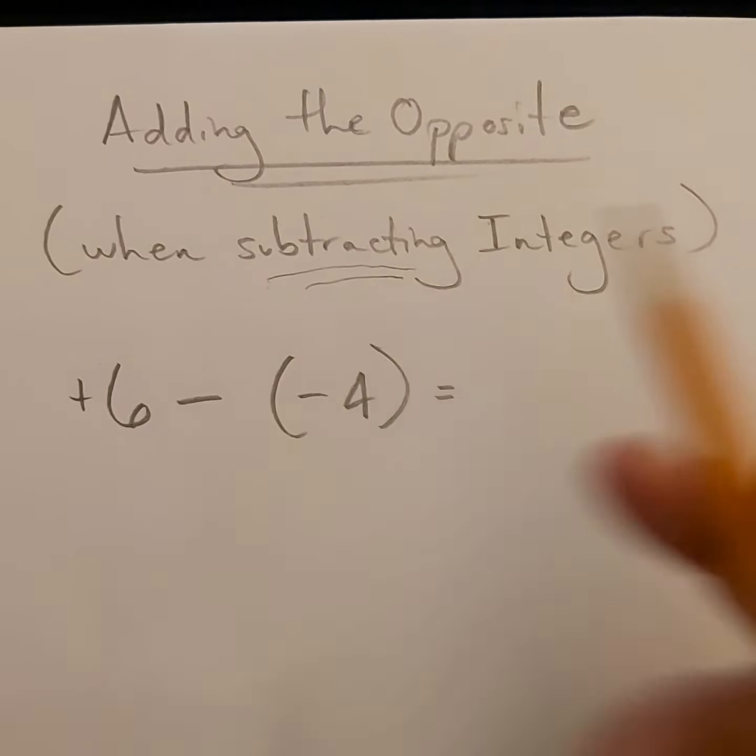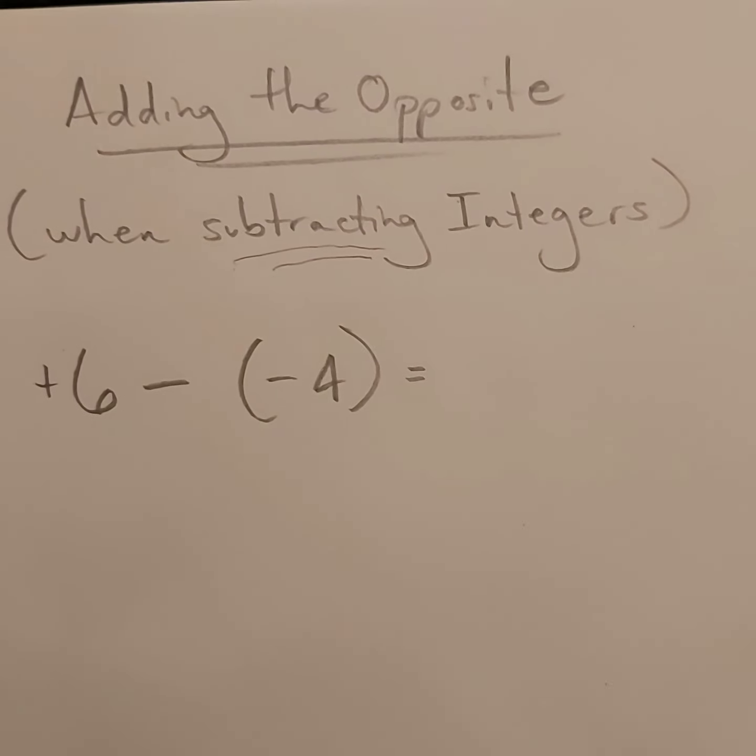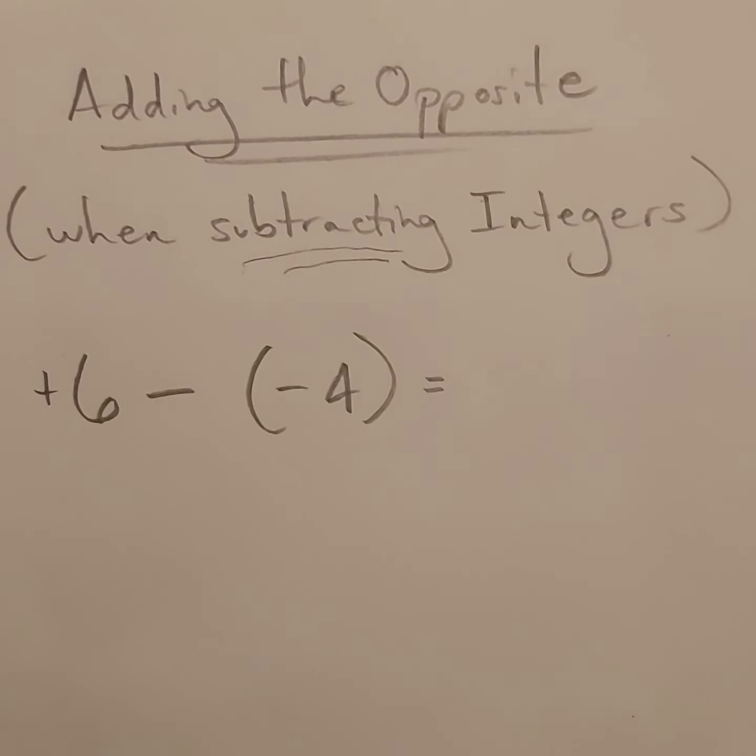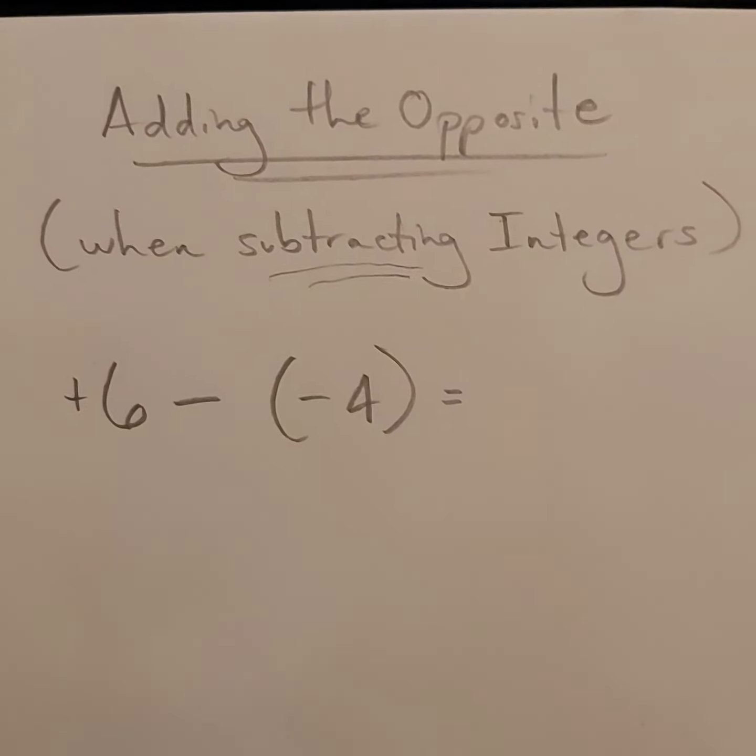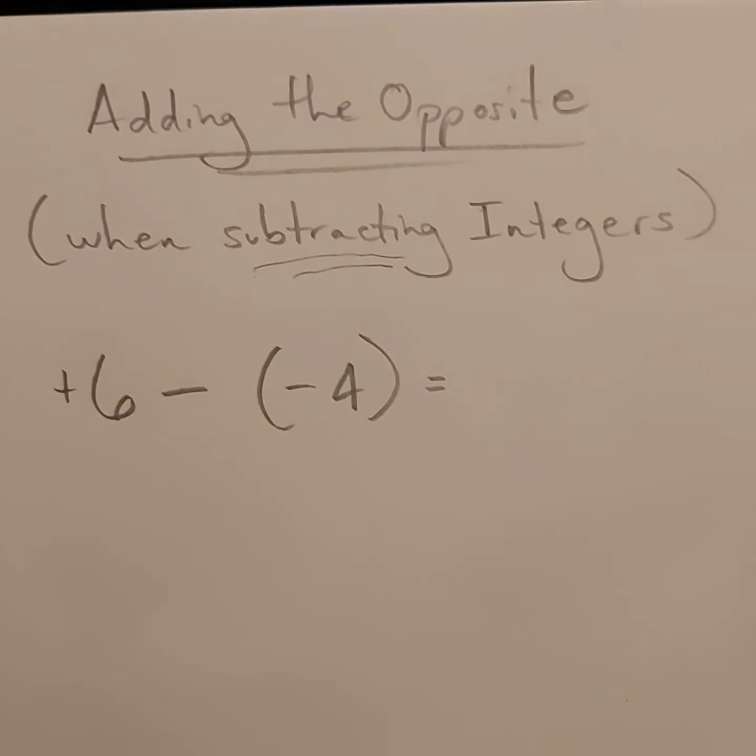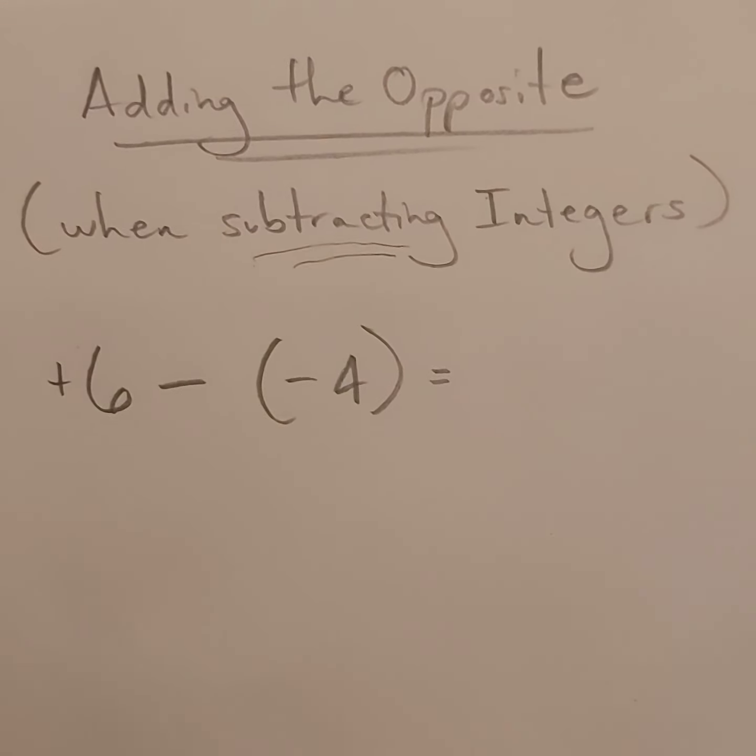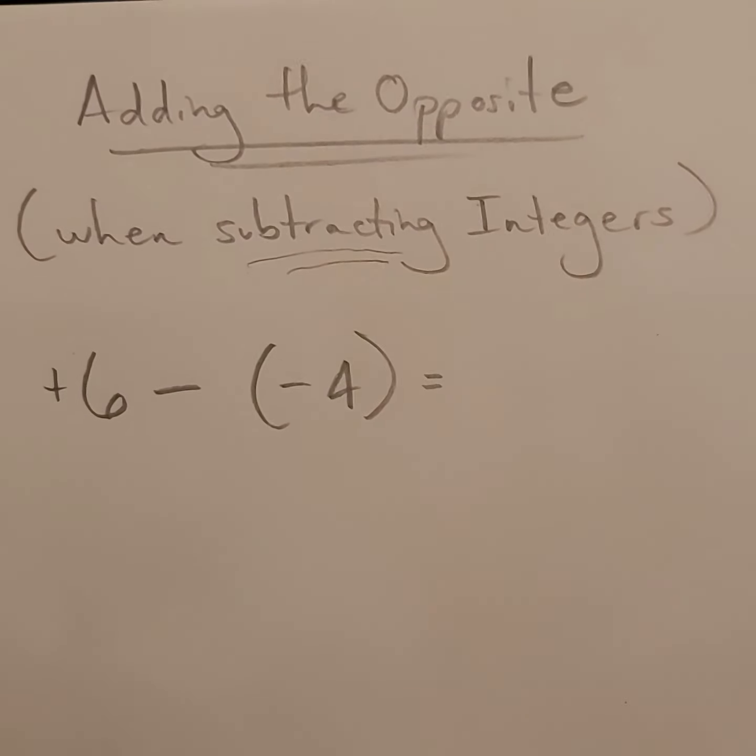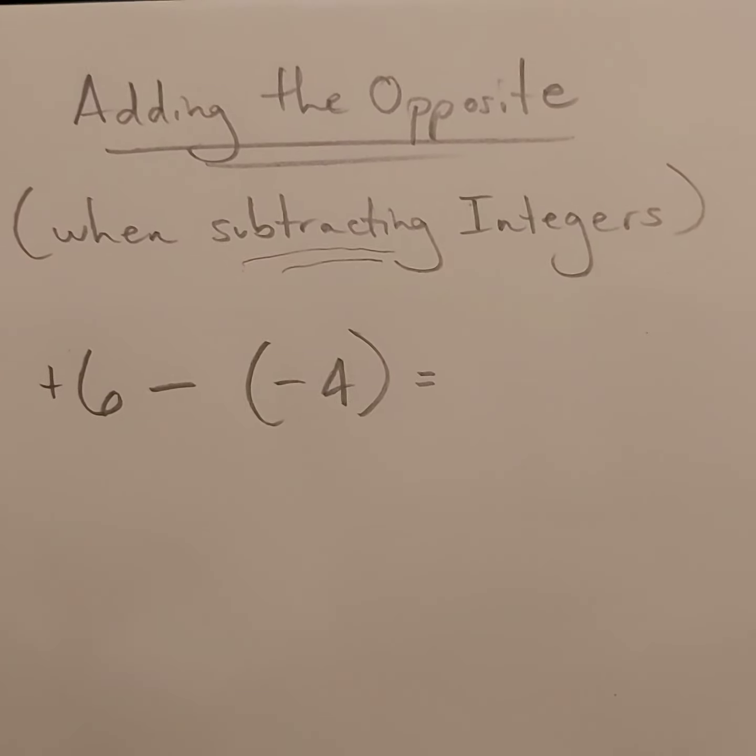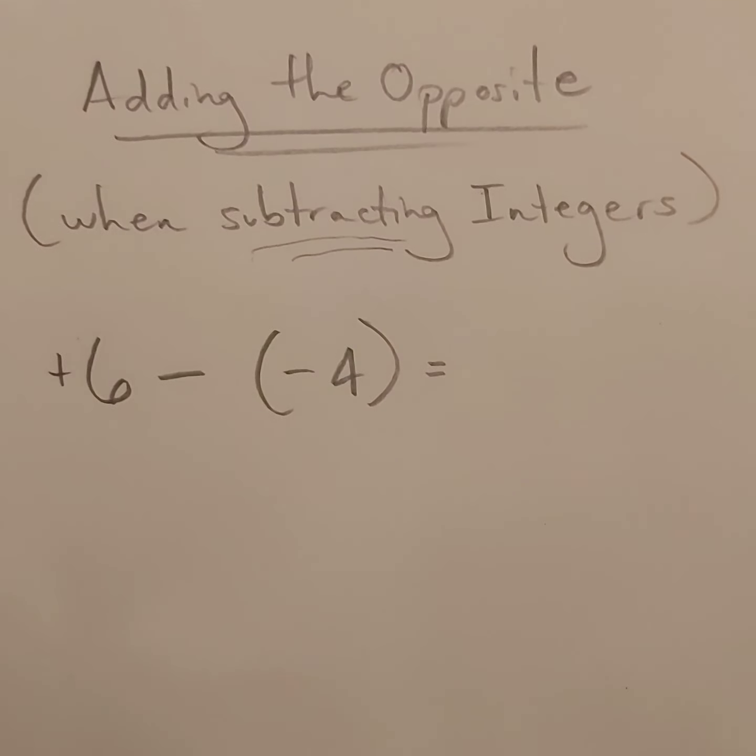We've already done work with addition of integers, and we have three different strategies we've tried for that. There's the number line, there's the integer chips when you create zero pairs, and then there's also those rules that are on the PDF sheet where you do a different strategy depending if the signs are different or if the signs are the same.